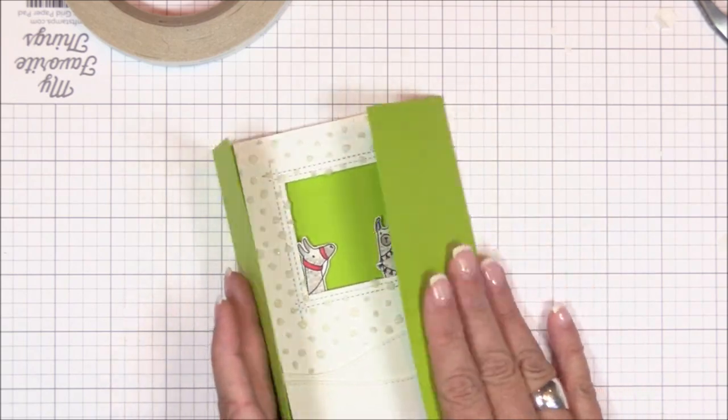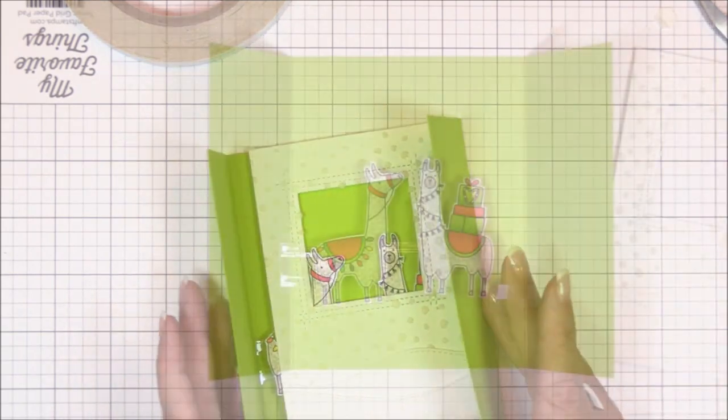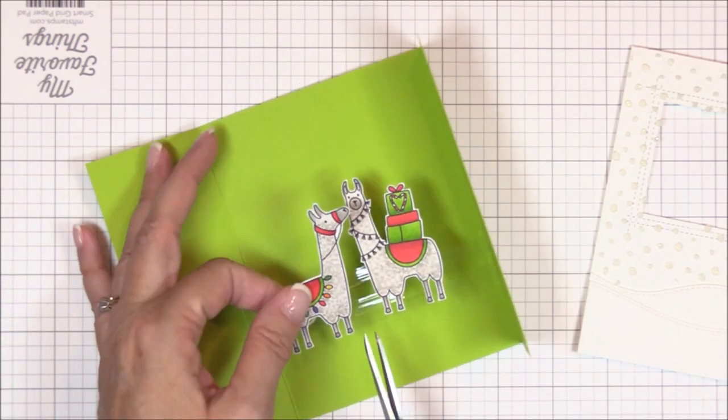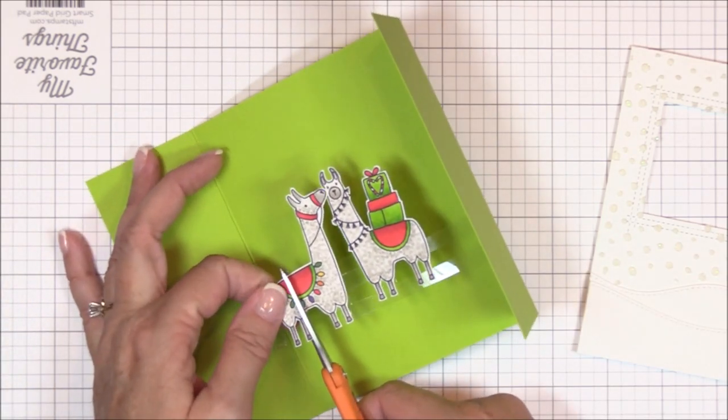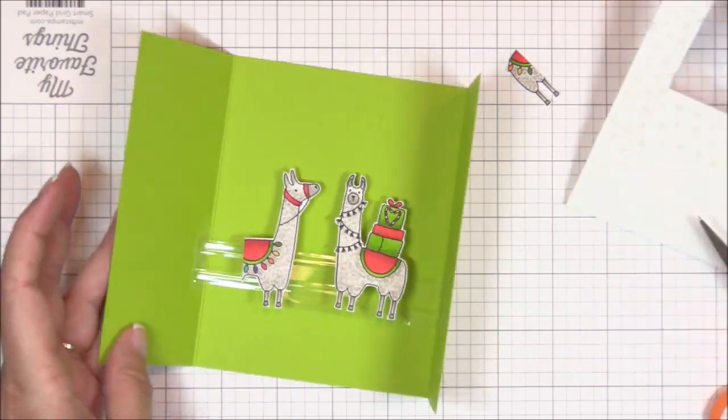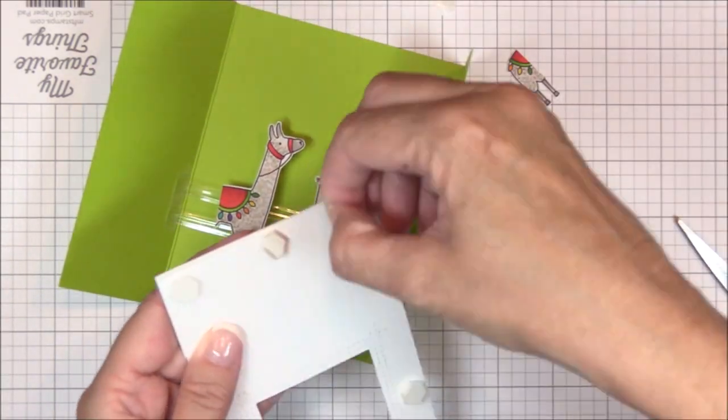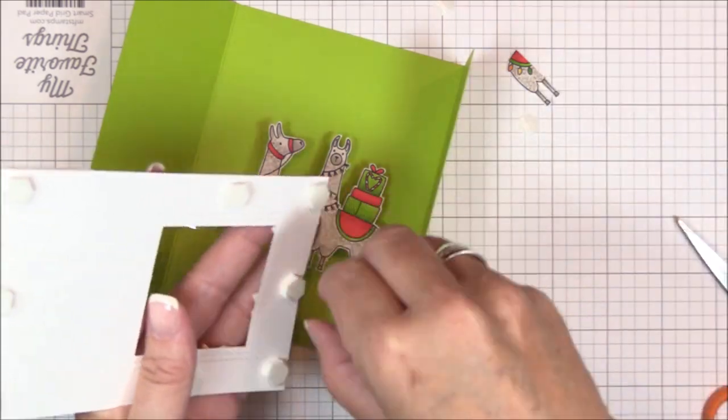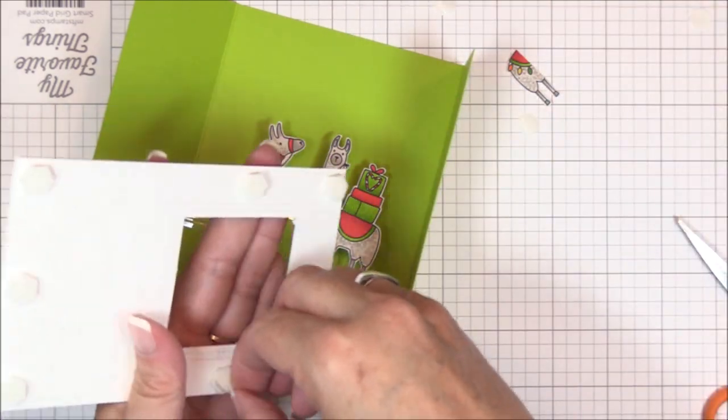However, when I went to close the card, something was getting in the way of the card closing properly. I realized that the left llama's booty was a little too big. No problem! Since the majority of the llama is hidden behind the interior panel, it's no big deal to use my detail scissors to cut off the portion of the left llama that was getting in the way. Problem solved!